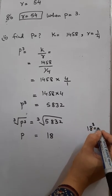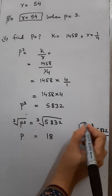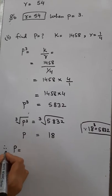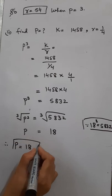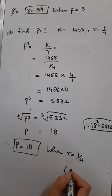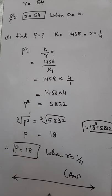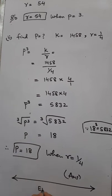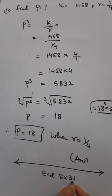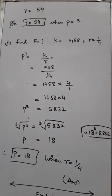18 cubed is 5832 — you can verify this with a calculator. Therefore, P equals 18 when R equals 1/4. This completes the inverse variation solution, and this is the end of exercise 3.1. All solutions have been completed this way — please practice these and try to solve them yourself. Thank you.